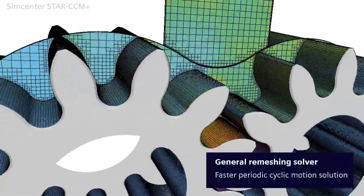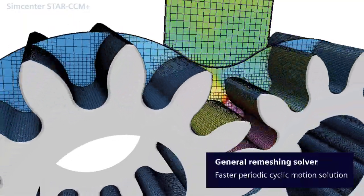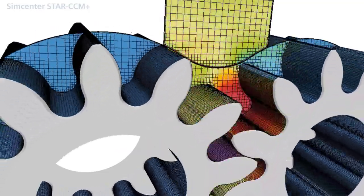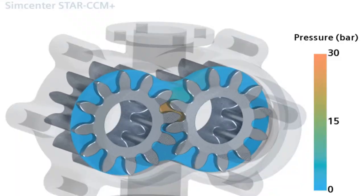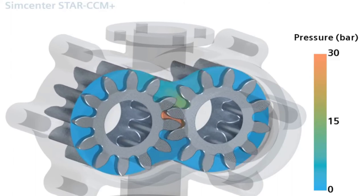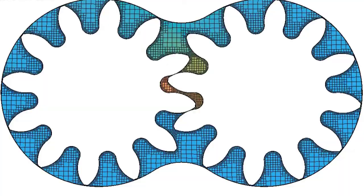The general remeshing solver allows you to easily simulate moving bodies through morphing and remeshing. Simcenter Star CCM Plus 2021.2 brings improvements specific to periodic cyclic motions, such as those seen in gear pumps, by automatically storing and reusing the mesh, reducing the overall solution time.